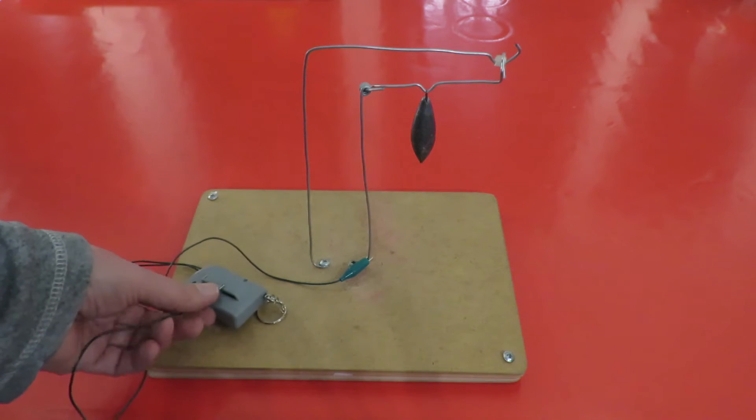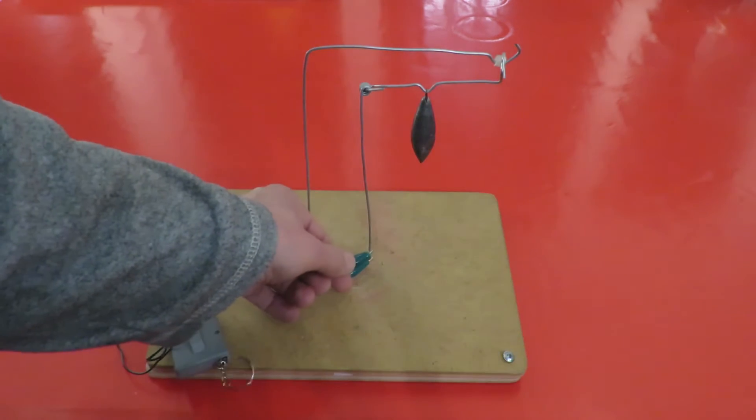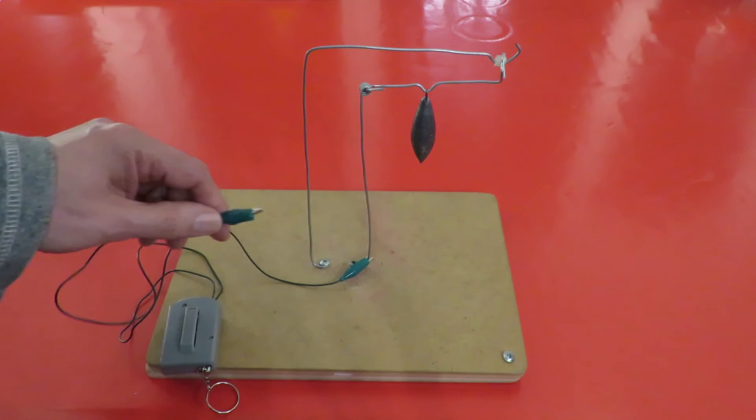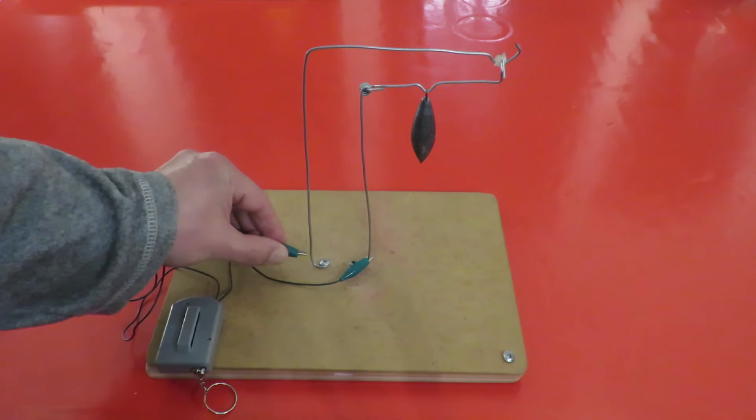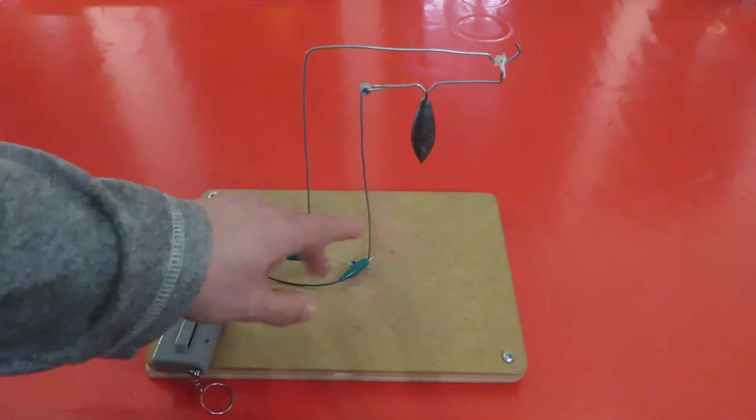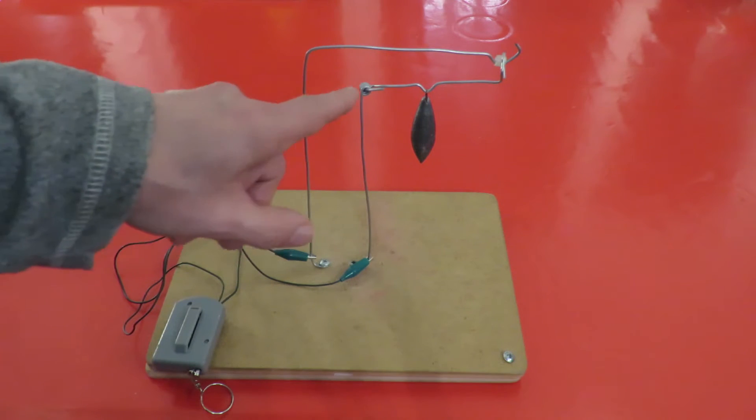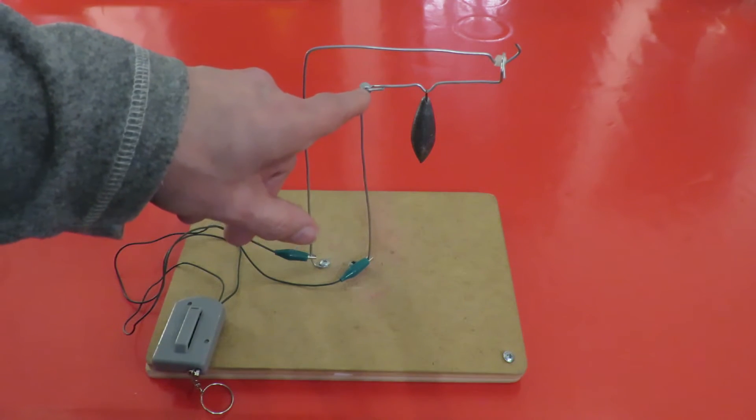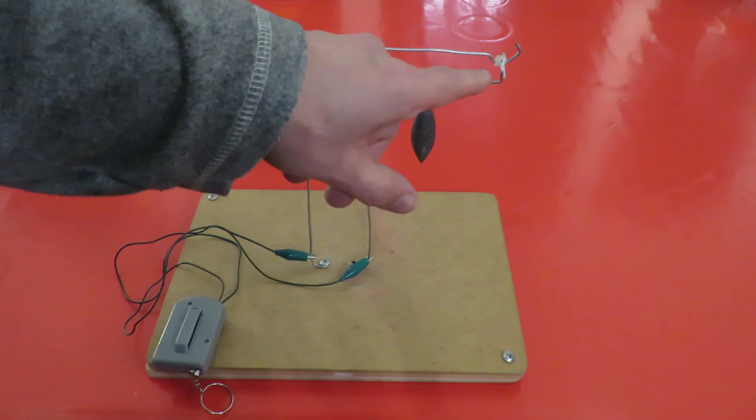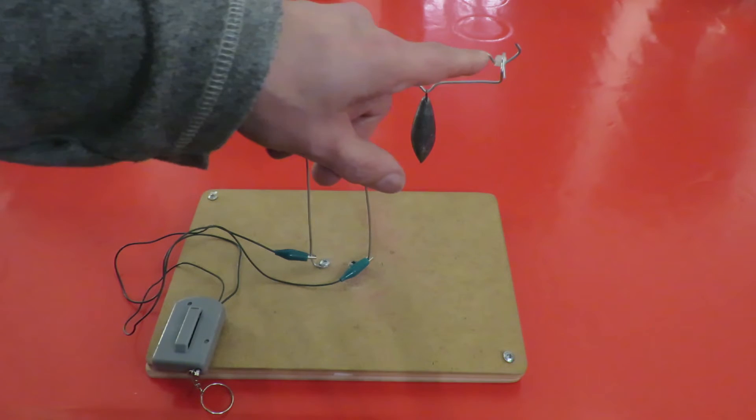Which I modified so that I can use these crocodile clips. So if I connect them to this little arrangement I've got here, this bit is hinged just here and at the moment it doesn't make contact with a bit of wire above it.